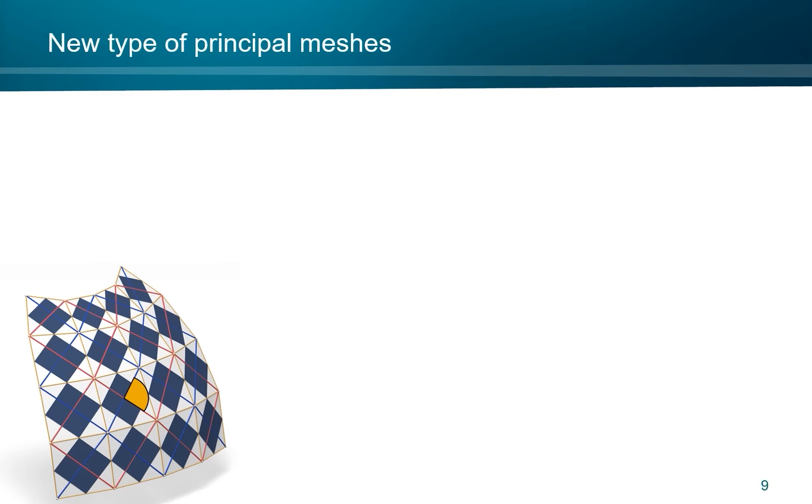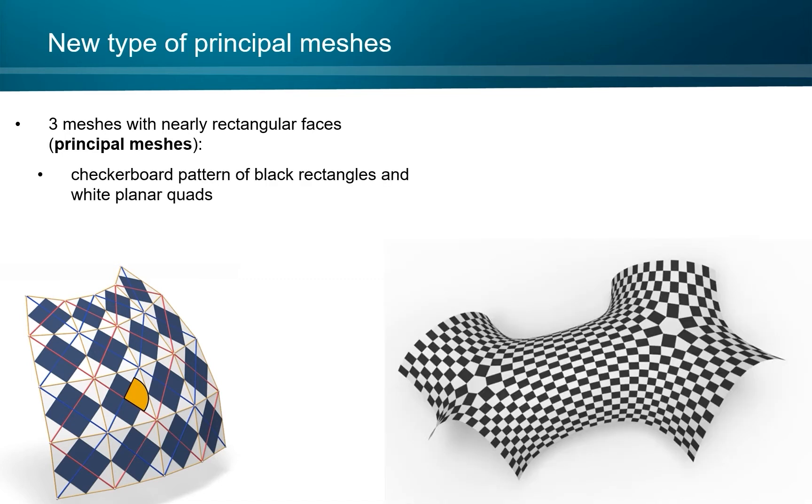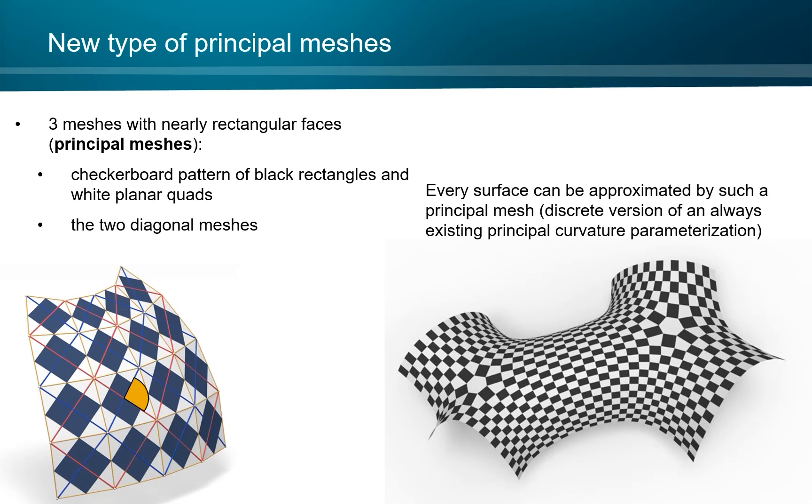We arrive here at new types of principal meshes. In fact, we get three meshes with nearly rectangular faces: the checkerboard pattern, which now has black rectangles and white planar quads, and the two diagonal meshes. Every surface can be approximated by such a principal mesh, simply because it is a discrete version of an always existing principal curvature parameterization.